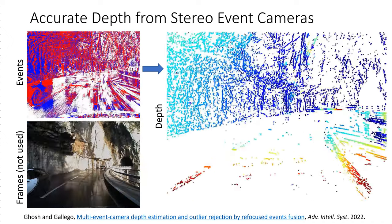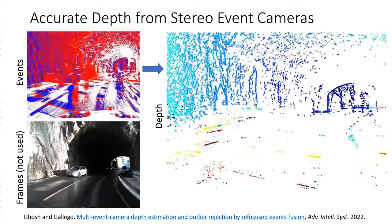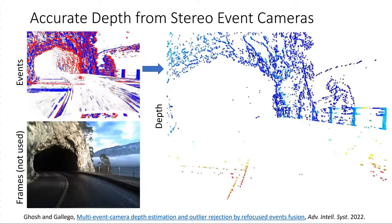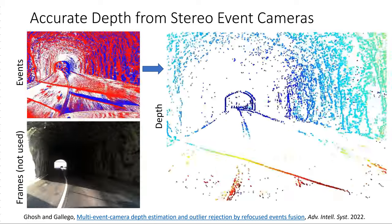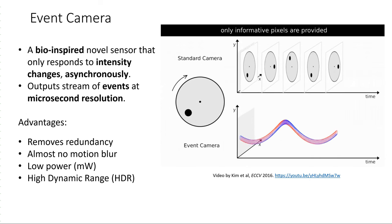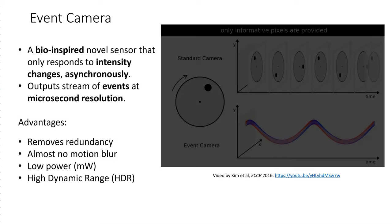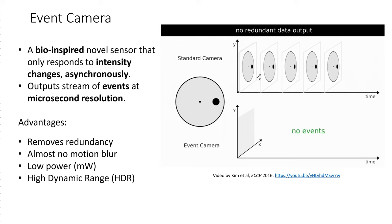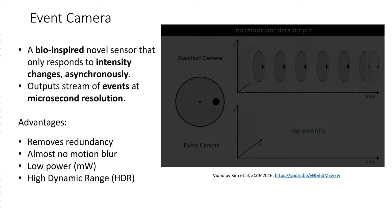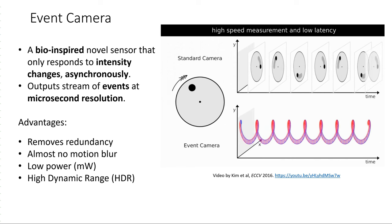Due to high dynamic range, event cameras can better perceive the scene in challenging lighting conditions where frame-based cameras suffer, for example when driving through tunnels. An event camera is a novel bio-inspired sensor that only responds to intensity changes in an asynchronous manner, generating a stream of sparse events at microsecond resolution. It removes data redundancy from static parts of the scene, produces almost no motion blur due to low latency, consumes very low power, and has a high dynamic range.